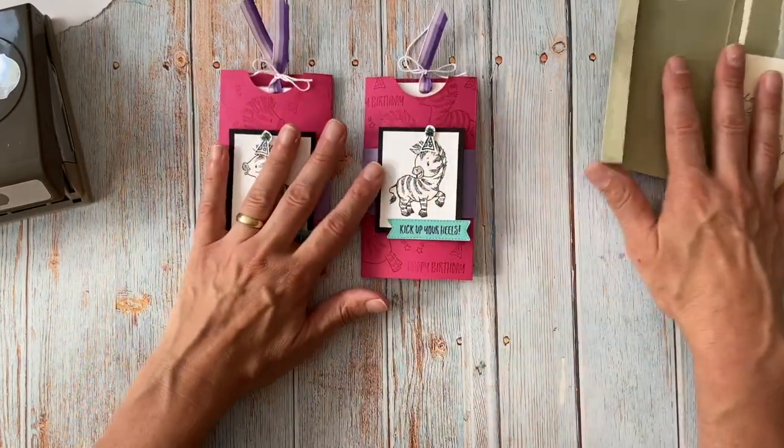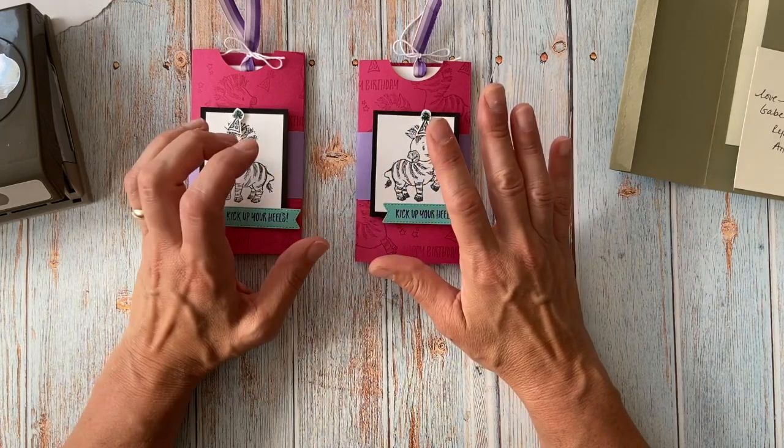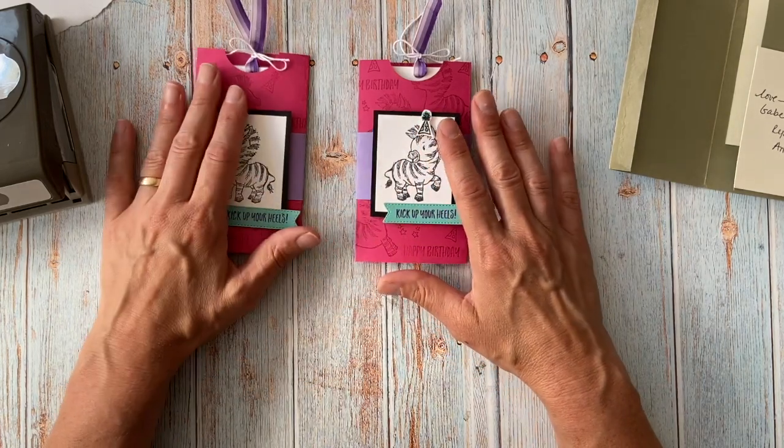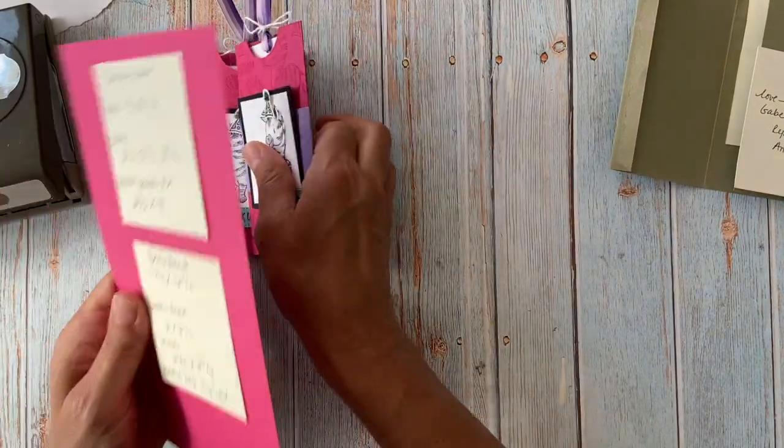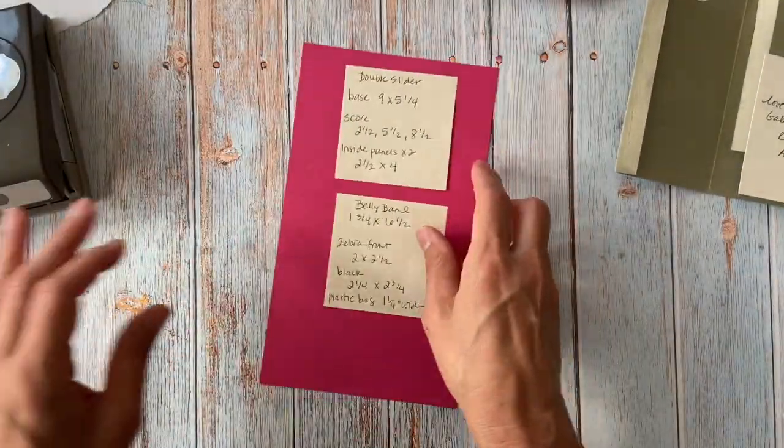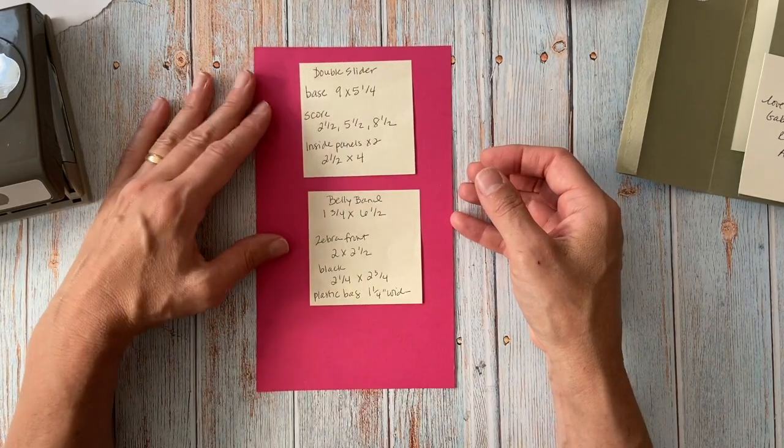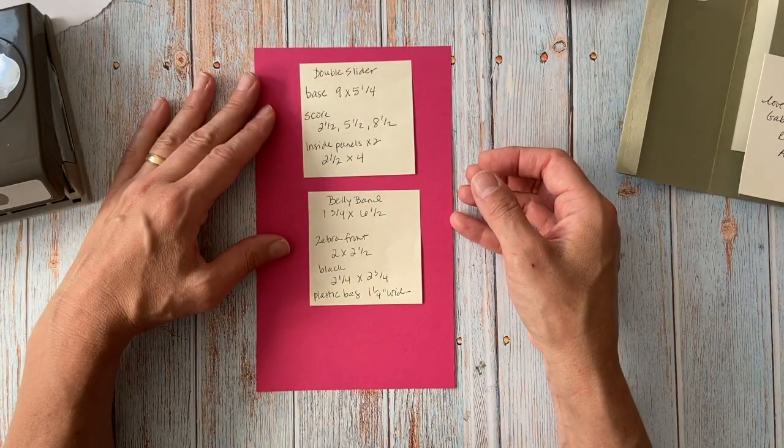All right. So for my club, a lot of this stuff is going to be kind of pre-punched and ready for you to go. So you should be able to follow along. But for those who are watching, who are not part of the club and you want to make it up on your own, I'm going to hopefully give you all the right dimensions in the right steps.